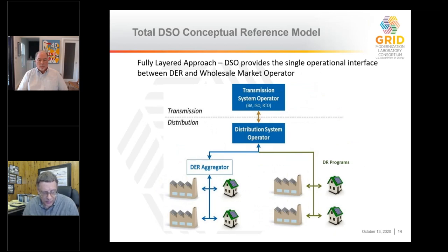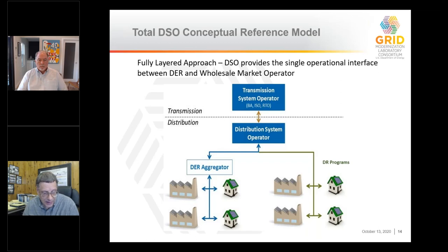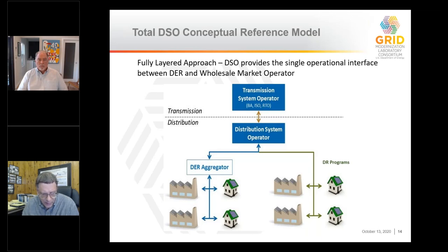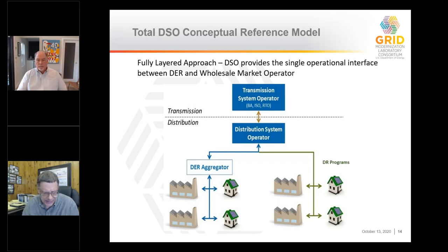Finally, the total DSO model — all the way on the right on our spectrum — is very simply structured. You see that clean interface between transmission and distribution, and the distribution system operator is responsible for managing all the things that happen at the distribution level, including handling the aggregations. That gives you a sense of the kinds of structures people are thinking about. There are lots of variations, especially in the hybrid models, and a lot of thinking going on in the U.S. and other countries about how to get from where things are today to some version of this kind of coordination going forward.